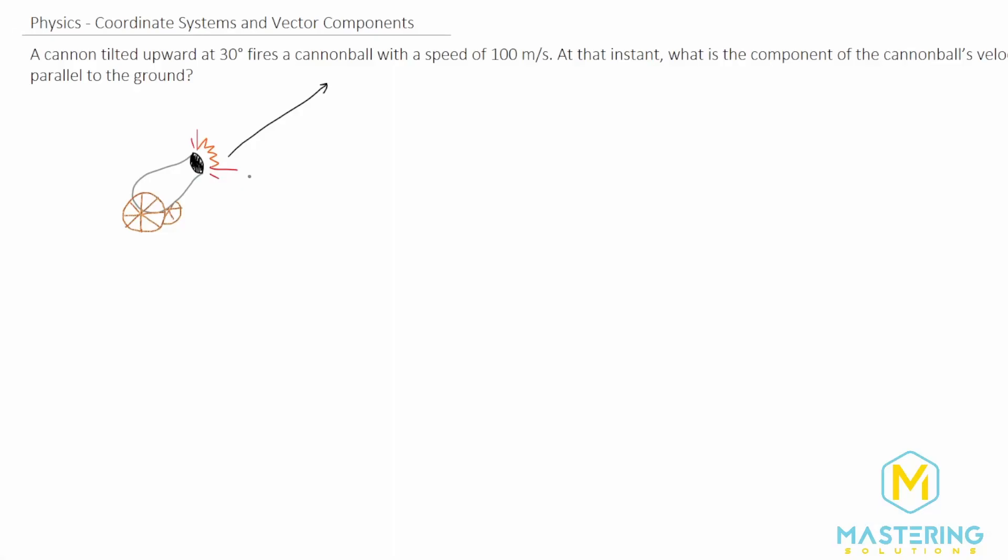Welcome to Mastering Solutions. In this problem we have a cannon tilted upward at 30 degrees and it fires a cannonball with a speed of 100 meters per second.